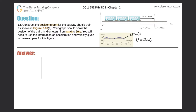Let's draw a velocity versus time graph. Time is on the x-axis in seconds, and velocity is on the y-axis in meters per second. We know the velocity is 0 when time is 0. Now, at 1 second, using the formula acceleration equals velocity over time, with the average acceleration of 1.8 meters per second squared and time of 1 second, the velocity works out to 1.8 meters per second. So we plot that point on the velocity graph.